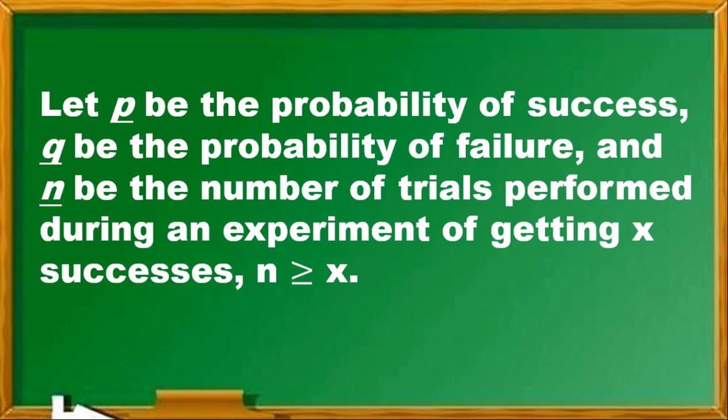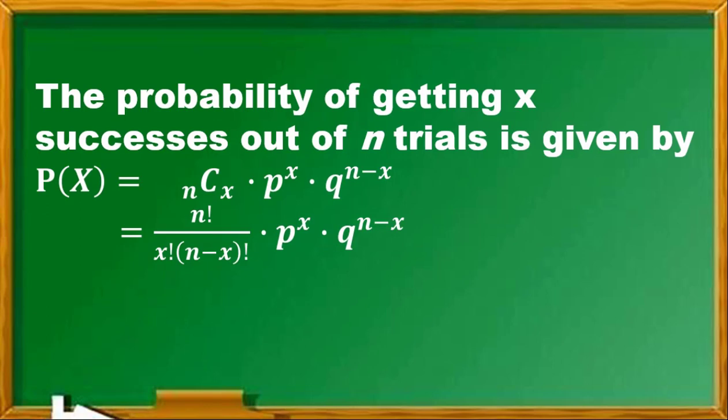In addition, N trials should be greater than or equal to X successes. The probability of getting X successes out of N trials is given by the formula P(X) equals the combination of N trials taken X success at a time, times the probability of success raised to X, times the probability of failure raised to N minus X. The combination formula is N factorial over X factorial times (N minus X) factorial.